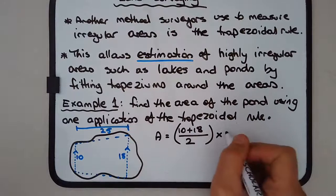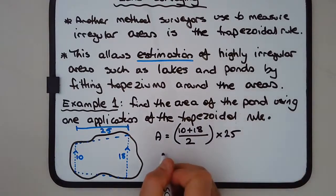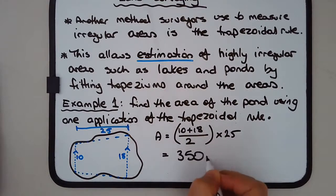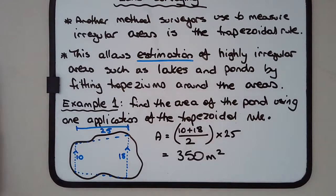Enter on the calculator: 10 plus 18 over 2 times 25, and we get 350 square meters. That's what we call one application when we're using one trapezium.